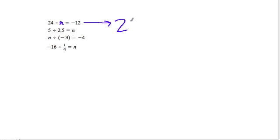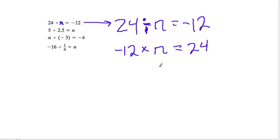So first we have 24 divided by some number gives you negative 12. To figure out what should go there, to figure out this division problem, I'm going to use multiplication. I'm going to think, negative 12 times what number would give me 24? That's just easier for me to think about.